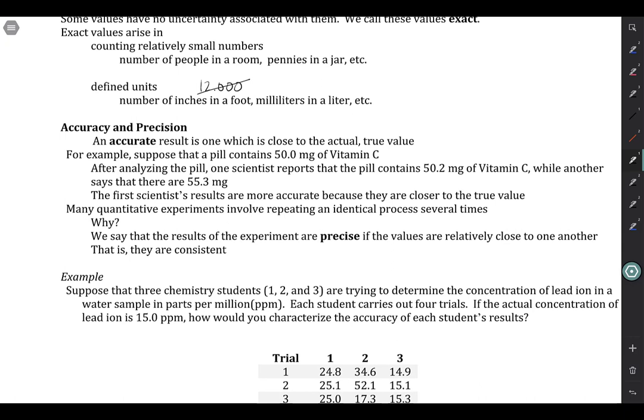When we describe how good a measurement is, there are two types of qualities that we take into account. We take into account a measurement's accuracy as well as its precision. When we say that a value is accurate, its value is close to the actual true value. For example, if we have a pill that has 50.0 mg of vitamin C in it, and we analyze it, and one scientist analyzes that and comes out with 50.2 as being the number of mg of vitamin C. The other scientist comes out with 55.3 there. What we'd say then is the first scientist is more accurate. They are closer to the true value than the second scientist.